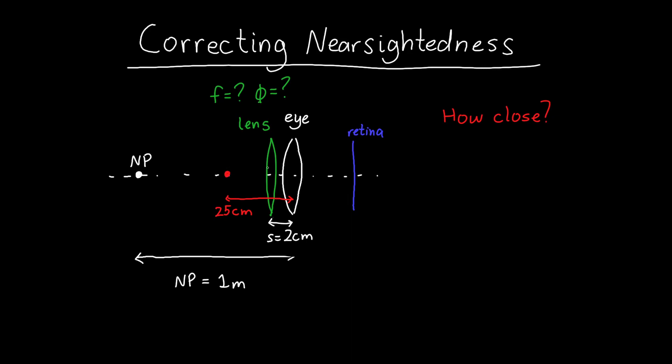Okay, so anything closer, they can have trouble seeing that's fine. Anything further away, we want them to be able to see. So how do we do that?